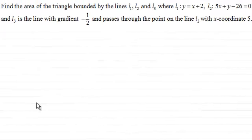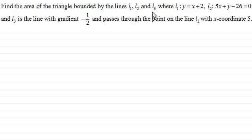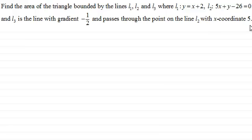Hi there. In this question, what I want you to do is to find the area of the triangle bounded by the lines L1, L2 and L3, where L1 has the equation y equals x plus 2, L2 has the equation 5x plus y minus 26 equals 0, and L3 is the line with gradient minus a half, and it passes through the point on the line L2 with x-coordinate 5.